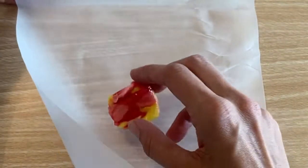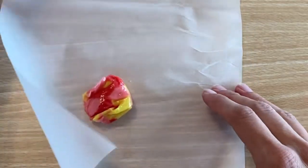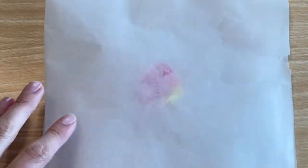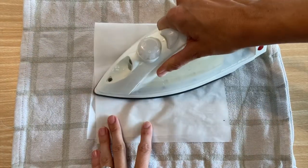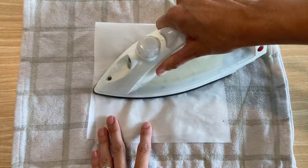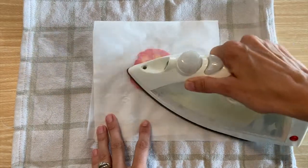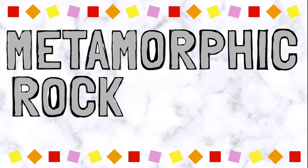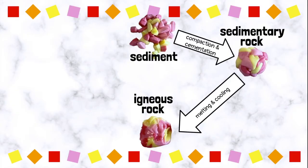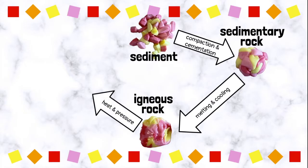Let's say that rock is buried underground, but it doesn't get quite hot enough to melt into magma. Instead, the immense heat and pressure change the rock into a metamorphic rock. So, our igneous rock has undergone heat and pressure to become a metamorphic rock.